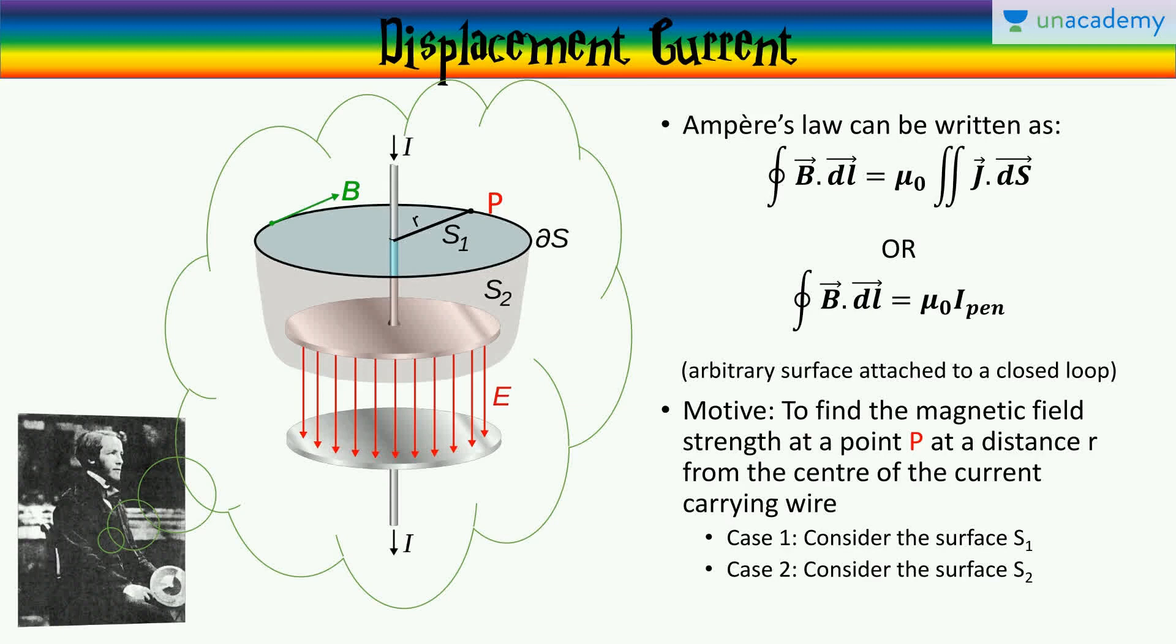Now, Ampere's law, which he formulated to measure the magnetic field around a current carrying conductor, can be written as follows, which is the closed line integral of B dot dl is equal to mu naught, which is the permeability of free space, and the open surface integral of J dot dS, where J is the current density, which is the number of charges that flow through a unit surface area per unit time.